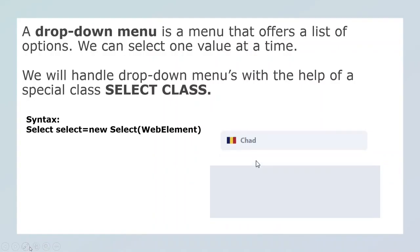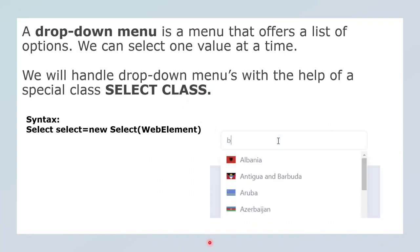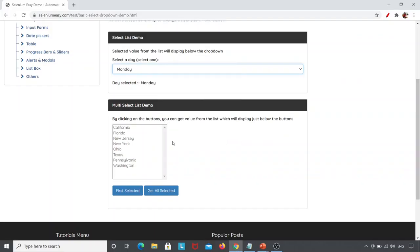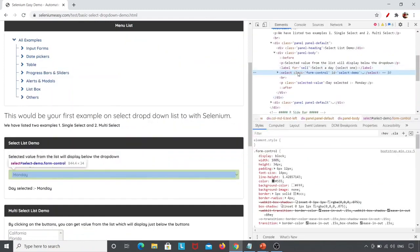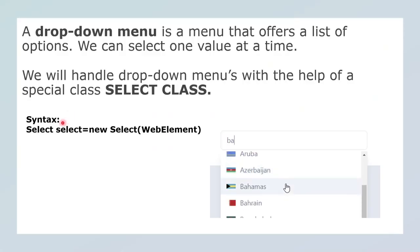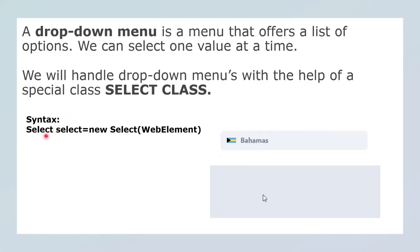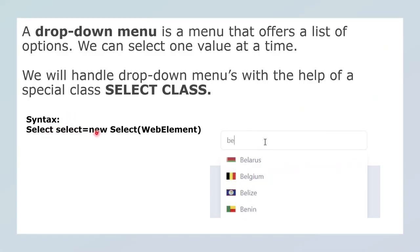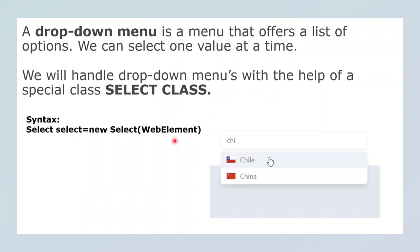We will handle the drop-down menus with the help of a special class called the Select class. Here you can see when I inspect this element, I can see the select tag. That is the reason why, to select values in this drop-down menu, I will be using the Select class. The basic syntax is: Select, then I create a reference — new Select — and specify my web element. This is the syntax of the Select class.